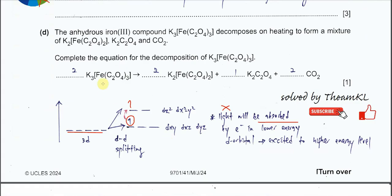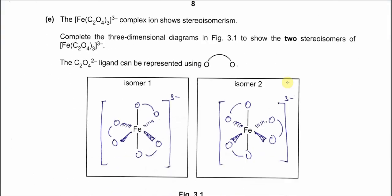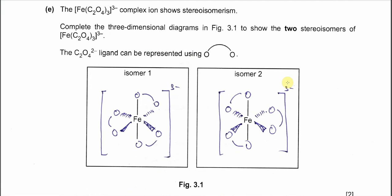Part D: The anhydrous iron(III) compound decomposes on heating to form mixtures. Complete the equation for decomposition. Actually, this is quite simple, you just need to balance it, so you get this ratio 2:2:1:2.